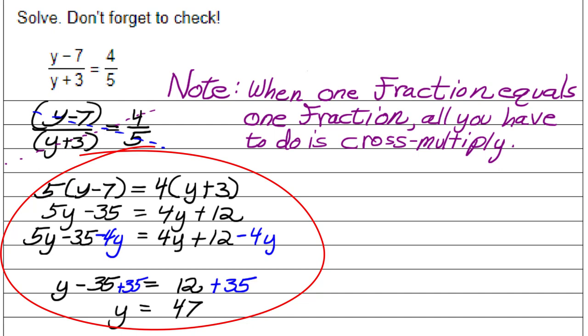We distribute, we distribute, we solve our equation, get the variable terms all on one side of the equation, and the number terms all on the other side of the equation, and we get y equals 47. We didn't even have to come up with an LCM when you've got a proportion.